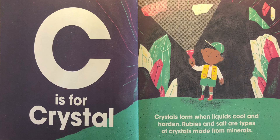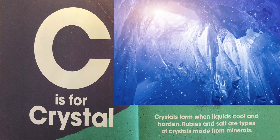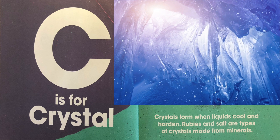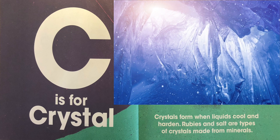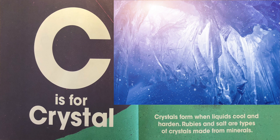C is for crystal. Crystals form when liquids cool and harden. Rubies and salt are types of crystals made from minerals.